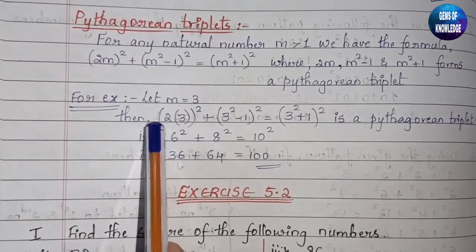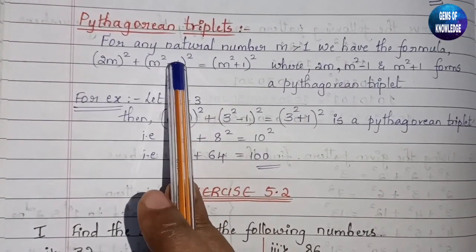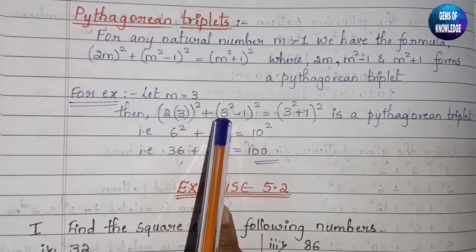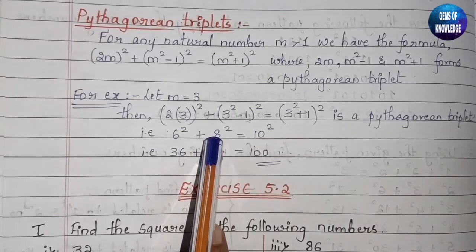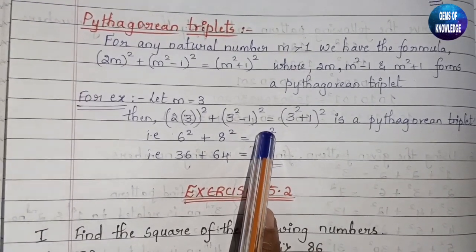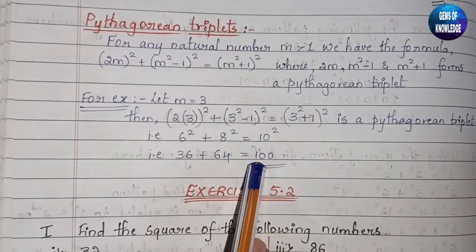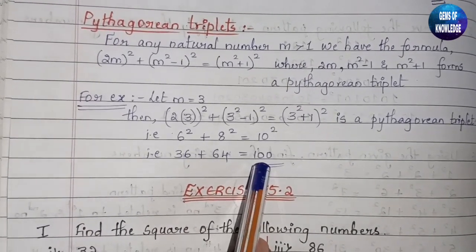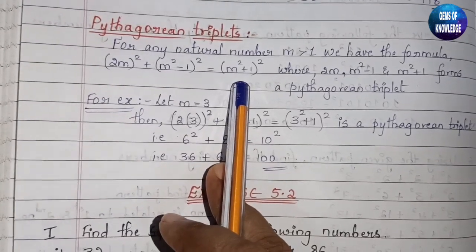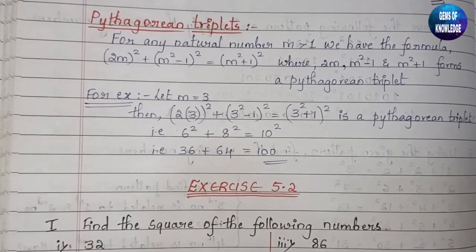So 2×3 = 6, giving us 6². Then 3² = 9, and 9-1 = 8, giving us 8². And 3²+1 = 10, giving us 10². Now, 6² = 36, 8² = 64, and 10² = 100. Since 36 + 64 = 100, the left-hand side equals the right-hand side, confirming that 6, 8, and 10 are a Pythagorean triplet.